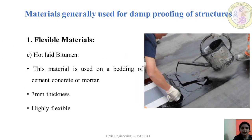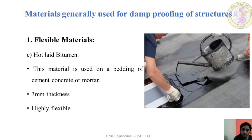The next material is hot laid bitumen. Hot laid bitumen is a highly flexible material applied in a thickness of 3 mm. It is placed on a bedding of concrete or mortar — hot bitumen is poured in its hot condition over the mortar or concrete layer. After it cools down, it forms a flexible damp proofing material.